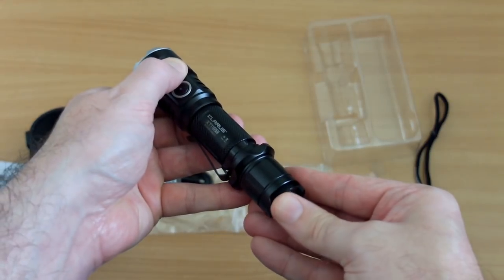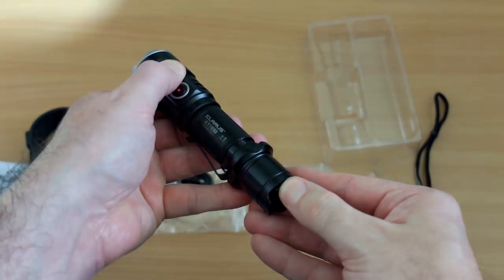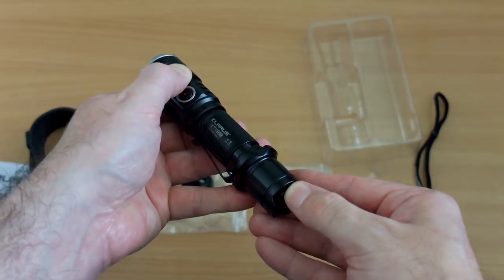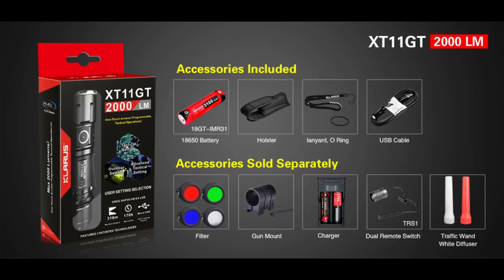You can put the strobe modes on those. Now this is just a very quick overview of some of the extras. I haven't tried the filters. You have a gun mount.